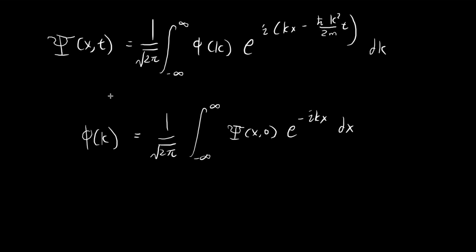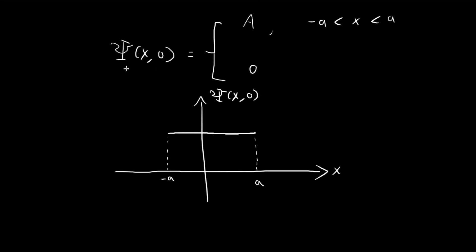In this example, we're going to take a look at how we can use these two formulas. The setup is that we have a particle with an initial wave function equal to some constant A within the region negative a to positive a, and then equal to zero everywhere else. So it looks like a constant within that region and zero everywhere else.